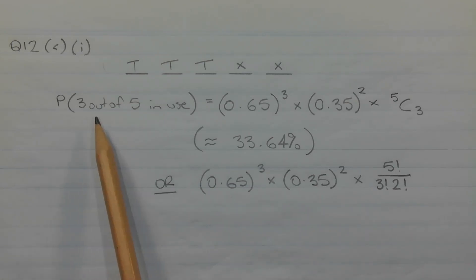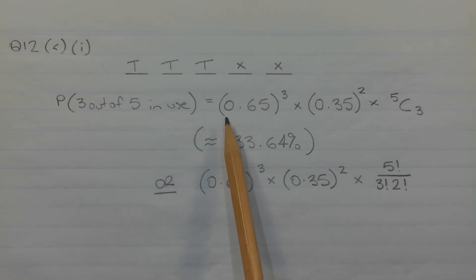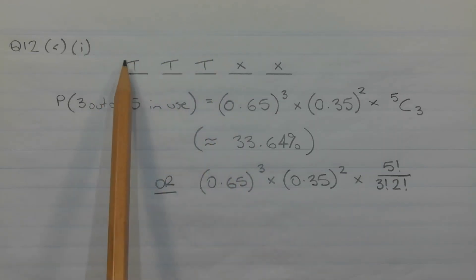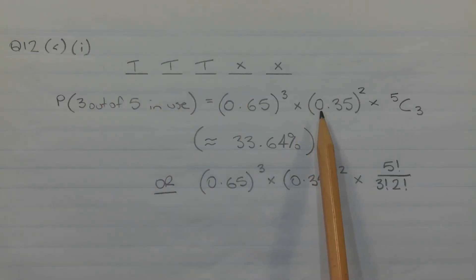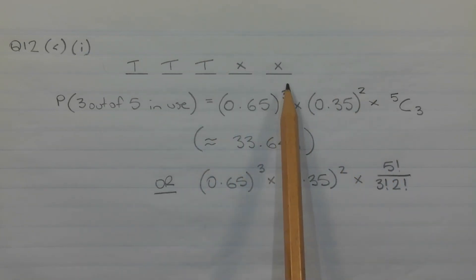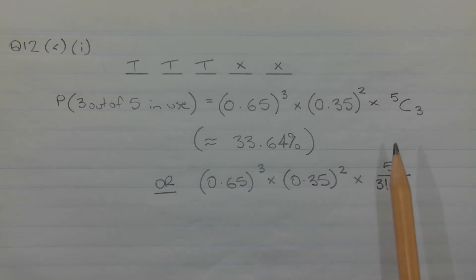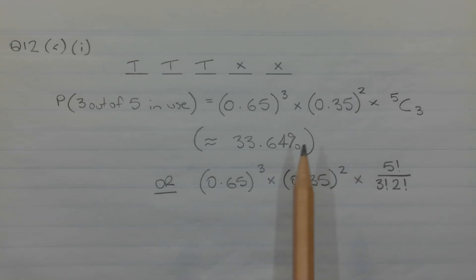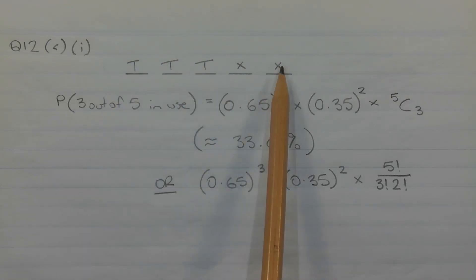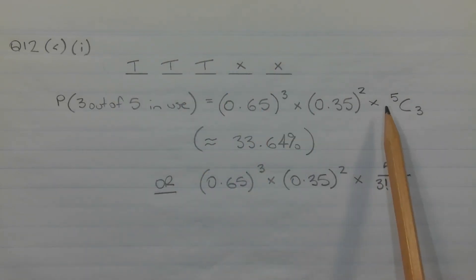So the probability that three out of five treadmills are in use at any particular time is given by 0.65 to the power of three, which comes from these three treadmills here, multiplied by 0.35 to the power of two, which comes from these two treadmills here. And since we don't know which particular three treadmills are in use, we need to multiply by the number of ways these five treadmills may be arranged, taking into account the repetition of T's and X's. And that's five choose three.